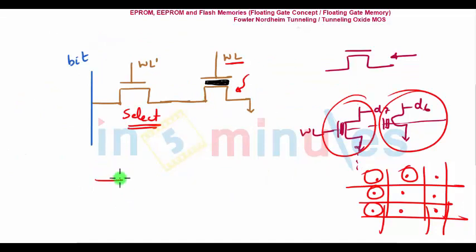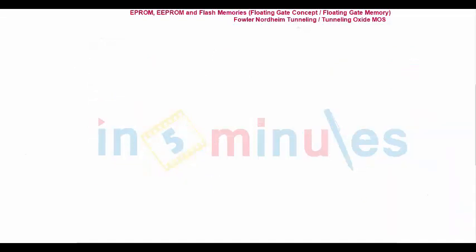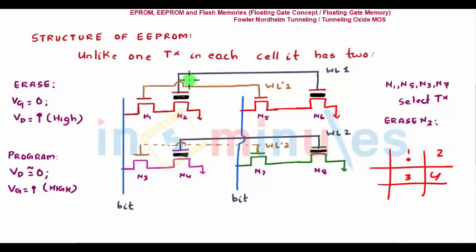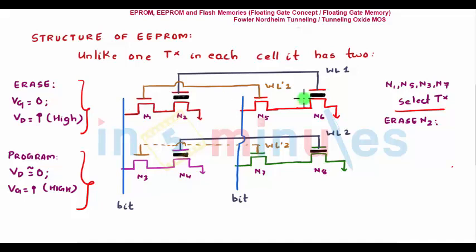I have replicated a basic block four times to show an array. One transistor is connected in series with another — this is a floating gate transistor, this is grounded, this is word line, and this is word line dash (not complementary, just labeled differently). There are four locations, each with two transistors. N1, N5, N3, N7 are all select transistors. This is a column connected to the bit line; this is a row where both floating gates share the same word line and both select transistors share word line dash.